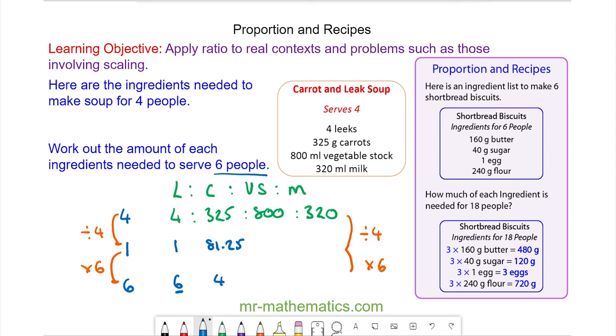For vegetable stock, I need 200 milliliters for one person. I multiply that by six and need 1200 milliliters. For milk, I need 80 milliliters for one person.